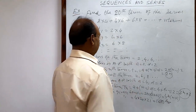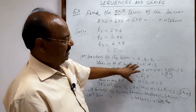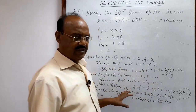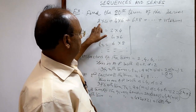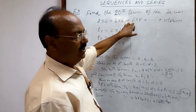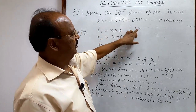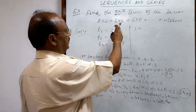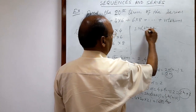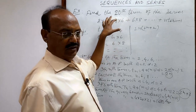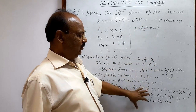Alternatively, by observation we can find the nth term directly. The first factors 2, 4, 6 are 2×1, 2×2, 2×3, so the nth first factor is 2n. Similarly, the second factors 4, 6, 8 are 2×1+2, 2×2+2, 2×3+2, so the nth second factor is 2n+2. By observing the pattern we can write the nth term directly, which is preferred in objective questions.